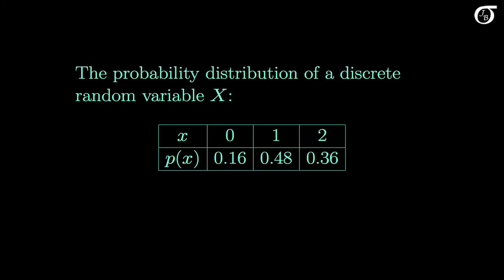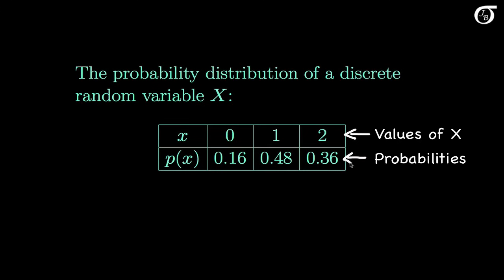Capital X represents the random variable, and lowercase x represents the values the random variable X can take on. Here, this particular random variable takes on the values 0, 1, and 2, and those values have these probabilities of occurring. We might want to know some characteristics of the distribution of X, such as its mean and variance.